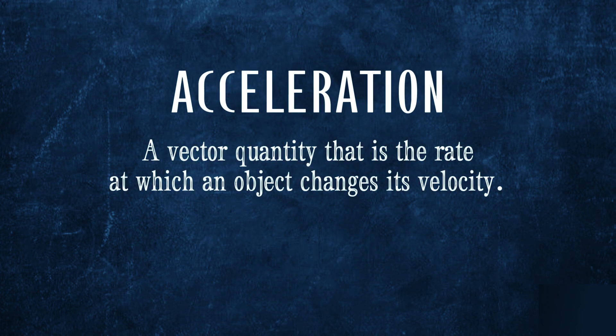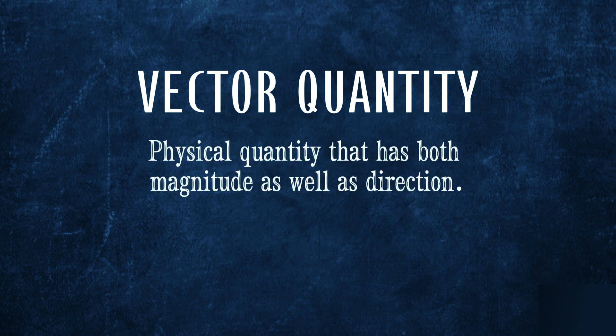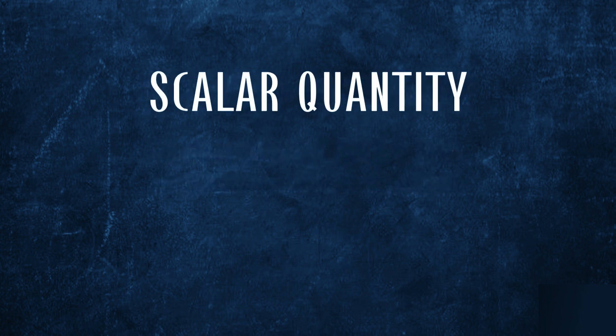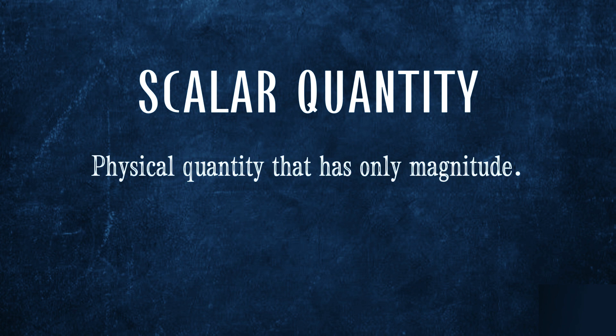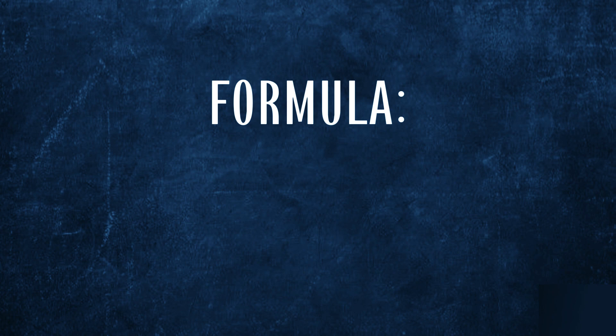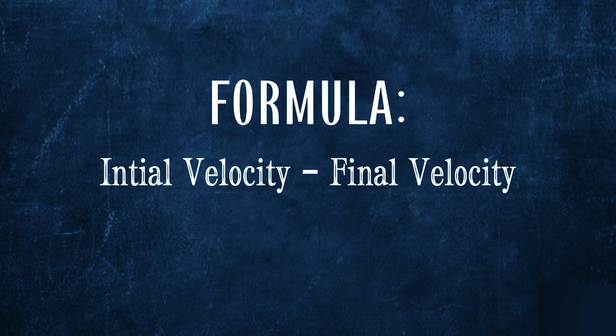Acceleration is a vector quantity that is defined as the rate at which an object changes its velocity. Vector quantity is defined as the physical quantity that has both magnitude as well as direction. A scalar quantity is defined as the physical quantity that has only magnitude. For us to get the acceleration of an object, we must subtract the initial velocity and final velocity, then divide it by the time elapsed.